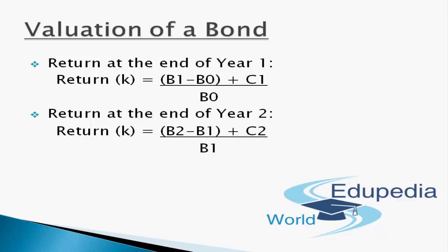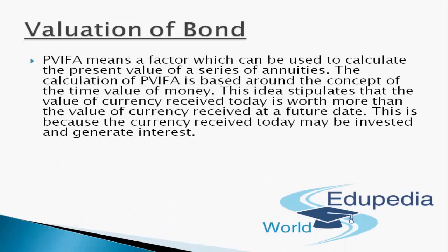It's easy and simple. We'll need to use PVIFA — Present Value Interest Factor of Annuity. PVIFA is a factor used to calculate the present value of a series of annuities. The calculation of PVIFA is based around the concept of time value of money, which stipulates that the value of currency received today is worth more than the value of currency received at a future date, because currency received today may be invested and generate interest.